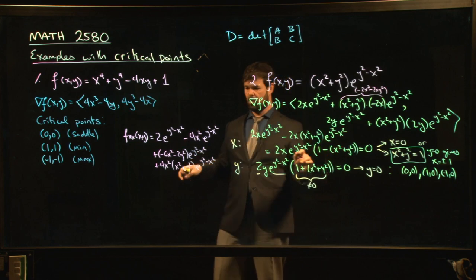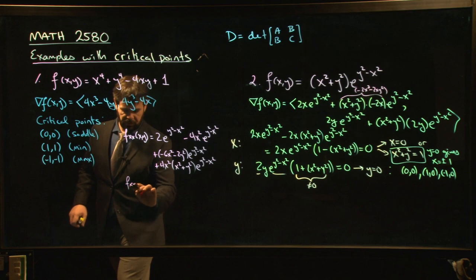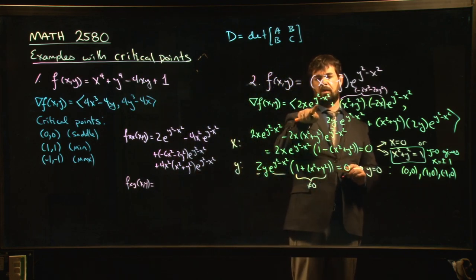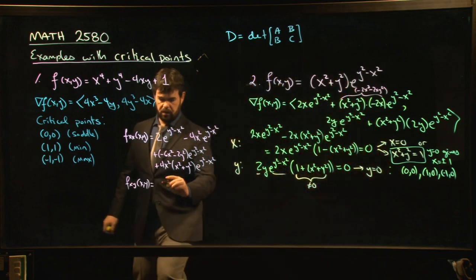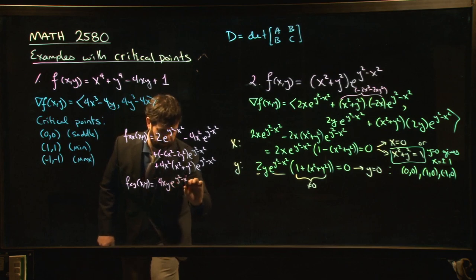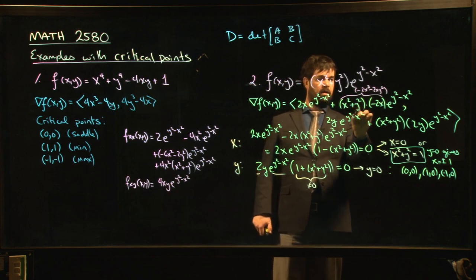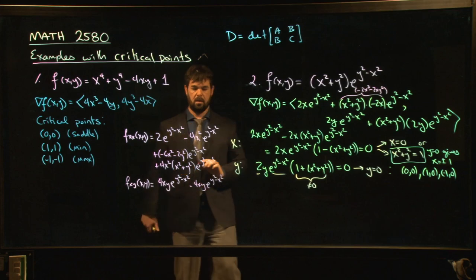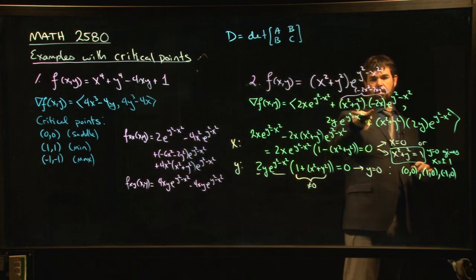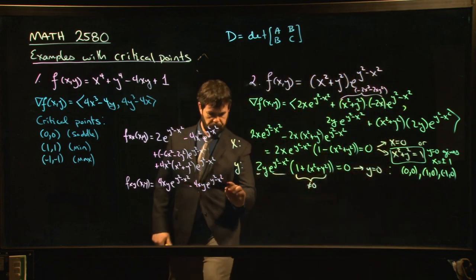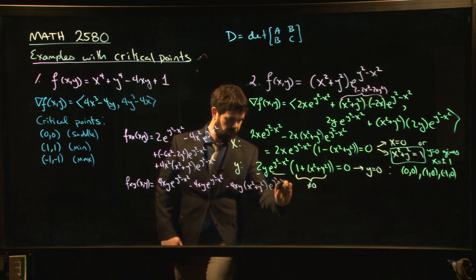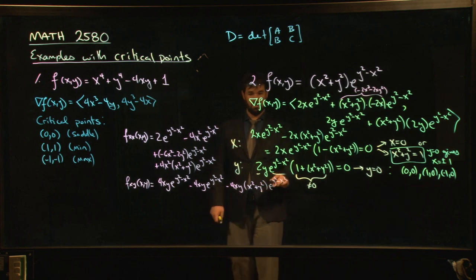We're going to be really glad we have equality of mixed partials — that saves us some time. For the mixed partial fxy: we get 4xy e^(y²−x²) from differentiating the first term with respect to y, then −4xy e^(y²−x²) from the next, and finally −4xy(x²+y²) e^(y²−x²). That's a lot of work.